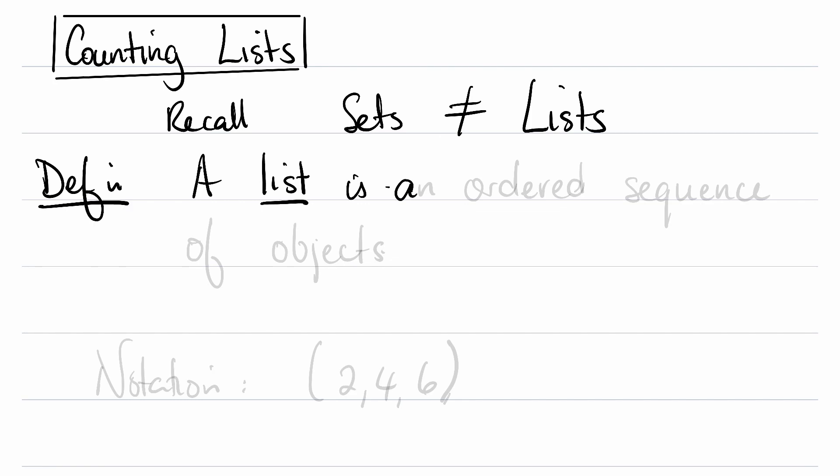A list is an ordered sequence of objects. For notation, we're going to use parentheses and then the elements separated by commas.